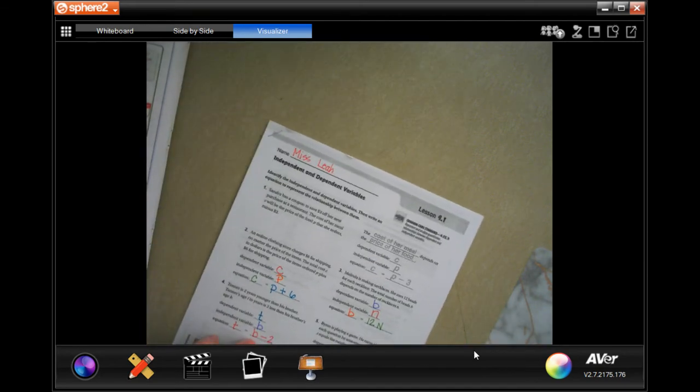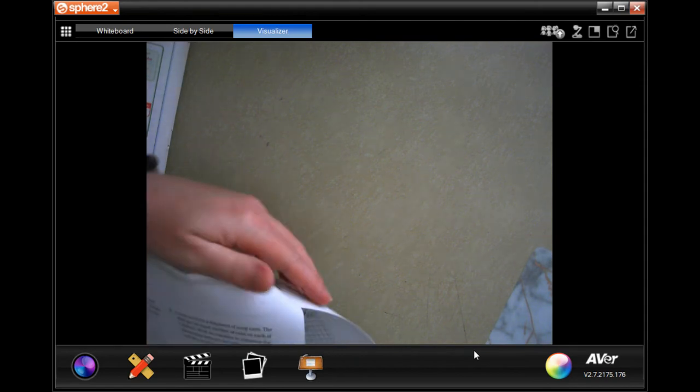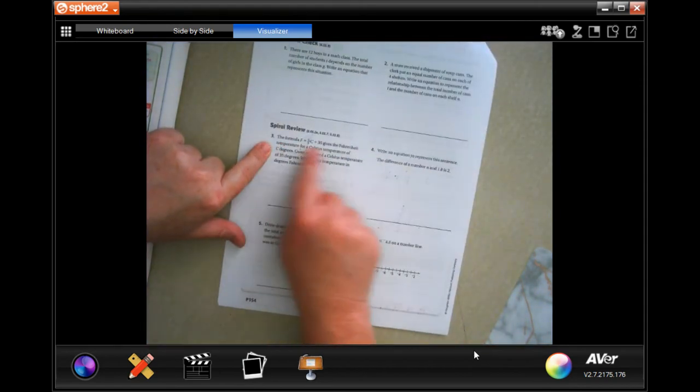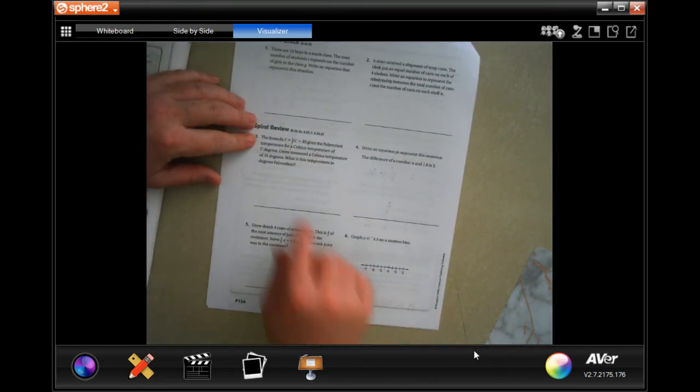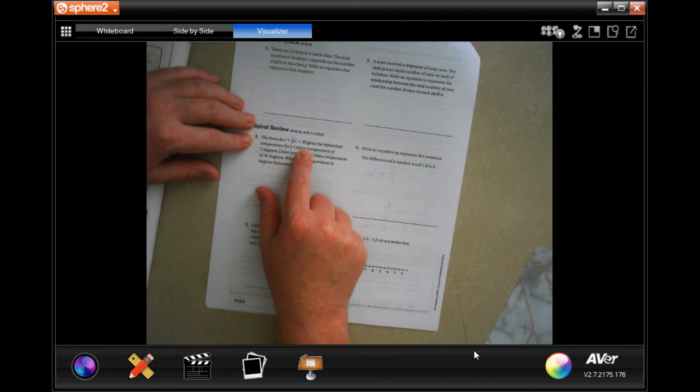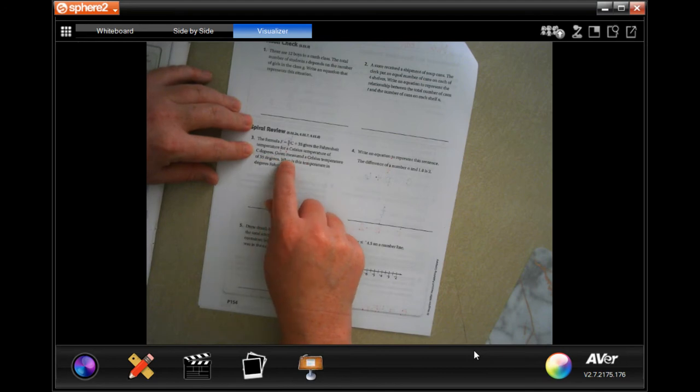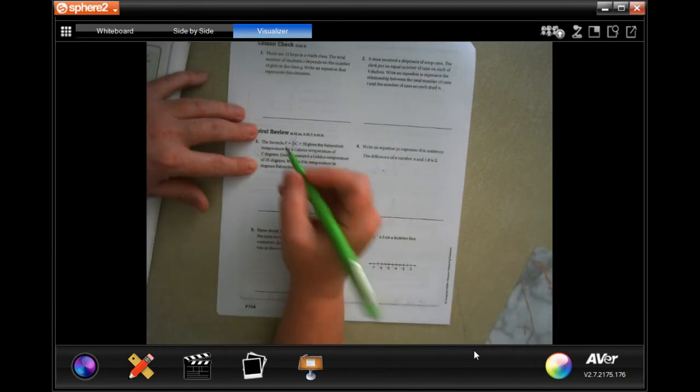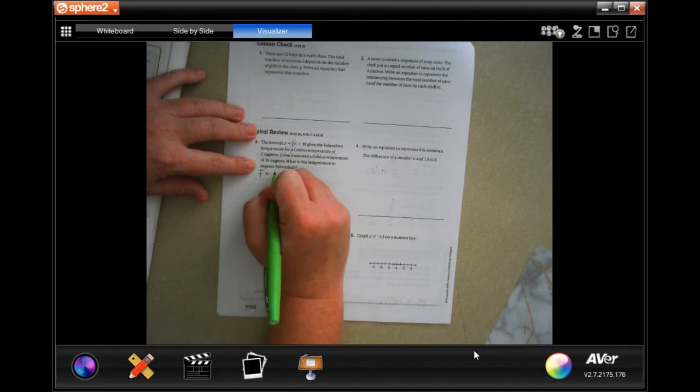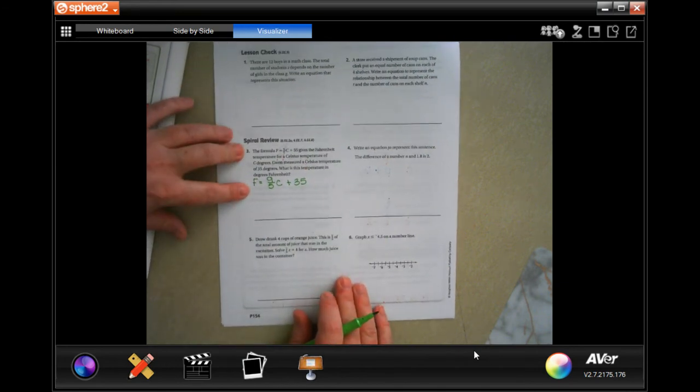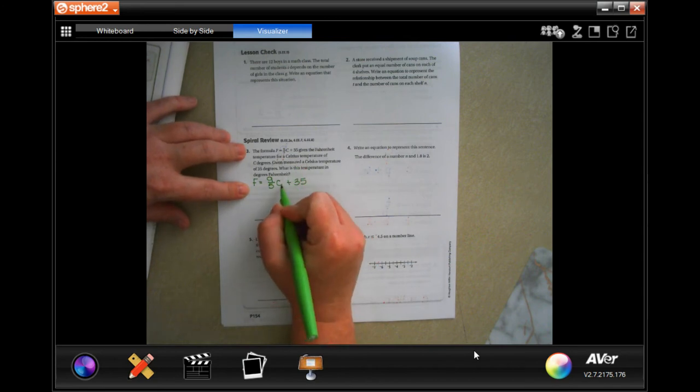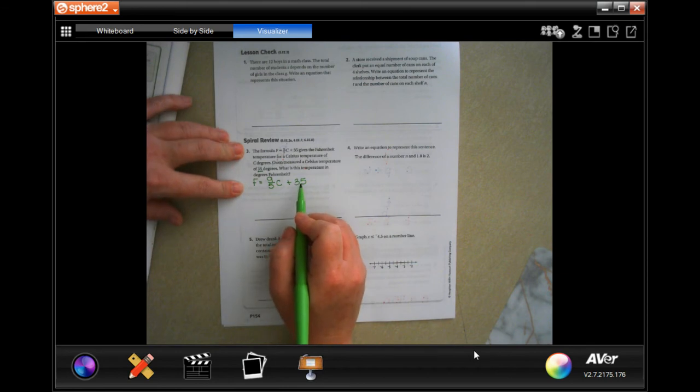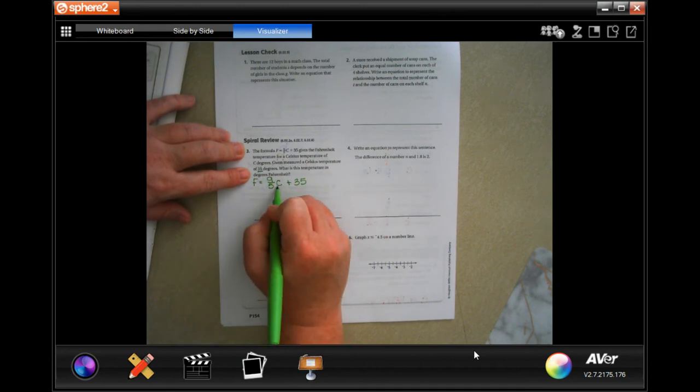So we're going to go to the back. You guys are going to do the lesson check. We're going to go down and do the spiral review. So this is the formula. F equals 9/5 C plus 35 gives the Fahrenheit temperature of a Celsius temperature of C degrees. Gwen measured a Celsius temperature of 35 degrees. What is the temperature in Fahrenheit? Let's do it. I'm just going to rewrite the formula right here so that I've got it close by. So now where it says C, I'm going to plug in 35.